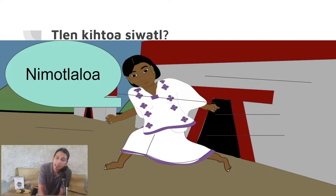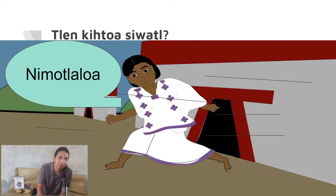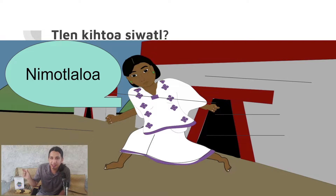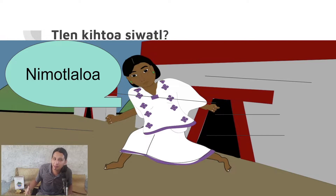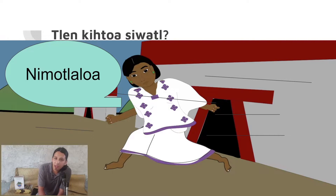'Tlen kihtoa' means 'what does she say?' When learning Nahuatl, you'll be tempted to translate word by word from English, but that's not how translation works. Nahuatl is a totally different system — a different world view, different grammar, different way words are put together. So 'tlen kihtoa siwatl' altogether means 'what does the woman say?' She says 'ni motlaloa,' which means 'I run.' You just add ni in front of the verb.